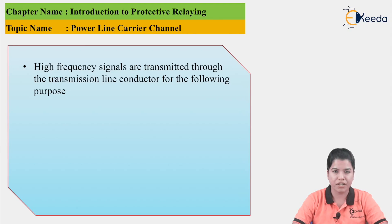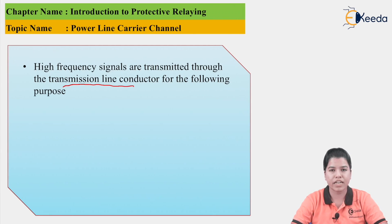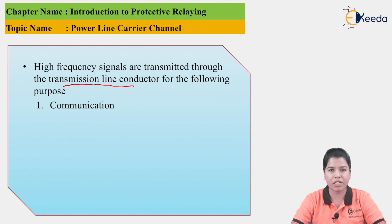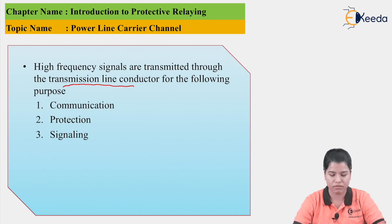The high frequency signals which are transmitted through the transmission line conductors are sent for the following purposes: first is communication, so for communicating between sending end and the receiving end. Then for protection from the abnormal conditions. Then signalling, that is to send the signal from one end to another end. Then monitoring, which is checking of the various parameters.